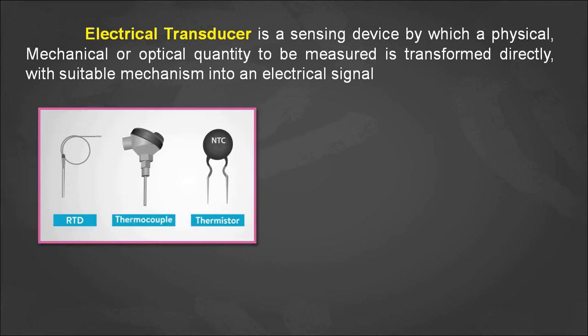Here are some resistive electrical transducers. The first one is RTD — Resistance Temperature Detector. The second is the thermocouple, and the third is the thermistor. For RTD, the output resistance is directly proportional to the input temperature — depending upon the temperature variations, the resistance will vary.